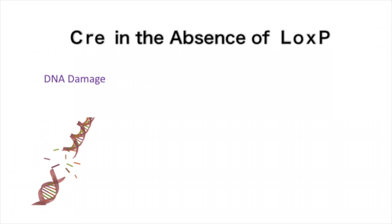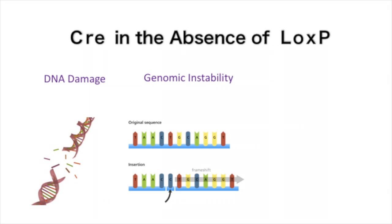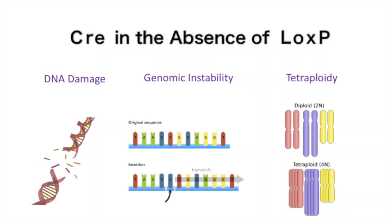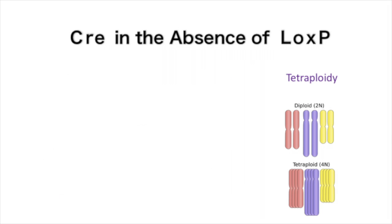Without LoxP sites for direction in DNA modification, Cre recombinase can have negative effects on cells. Bandu et al. published a paper in 2014 addressing some of these effects, which include DNA damage causing interruption of the G2 and mitosis phases in cell division, uncontrolled genomic instability such as inversions, deletions and tetraploidy — the duplication of chromosomes leading to four copies of each. Tetraploidy was the most detrimental of the three and was observed in cell line HCT116, human colon cancer cells.